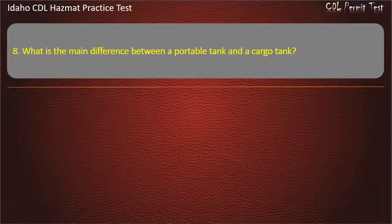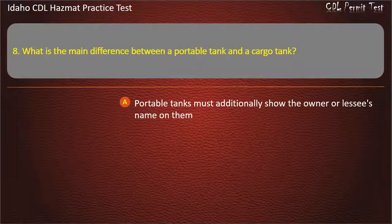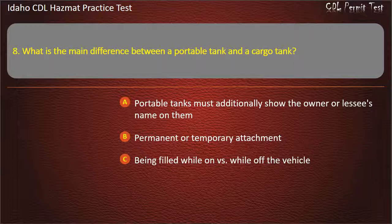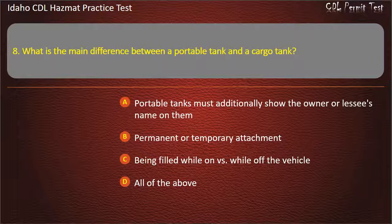Question 9. What is the main difference between a portable tank and a cargo tank? Portable tanks must additionally show the owner or lessee's name on them. Permanent or temporary attachment. Being filled while on vs. while off the vehicle. All of the above. Answer: All of the above.